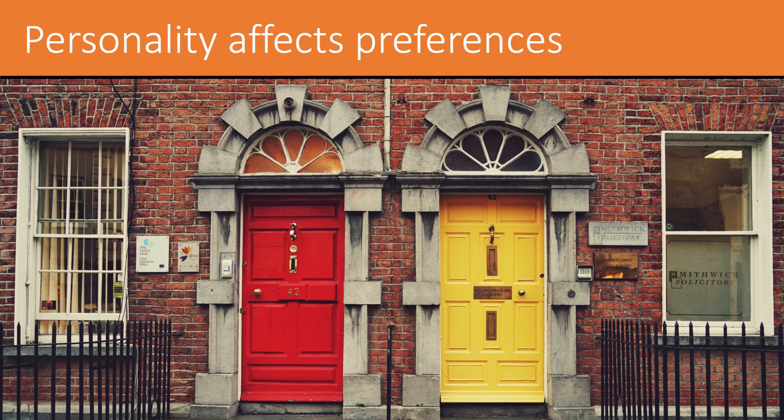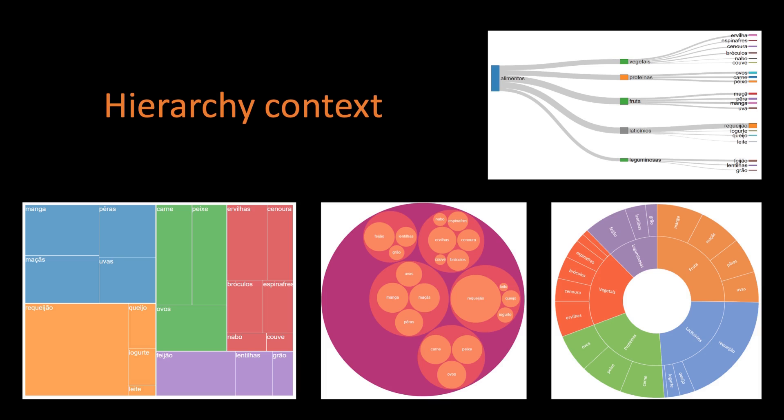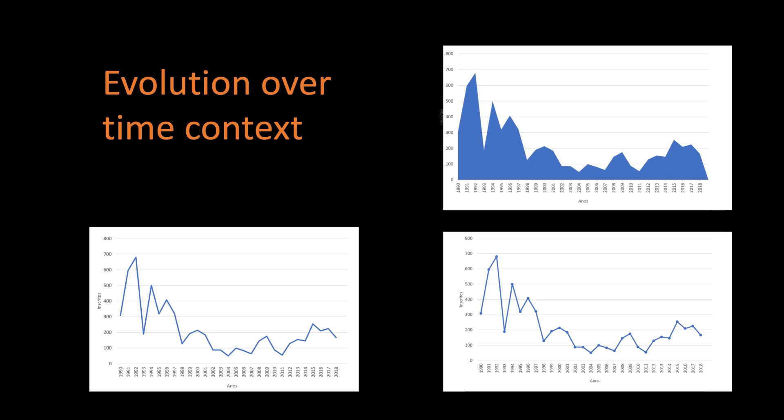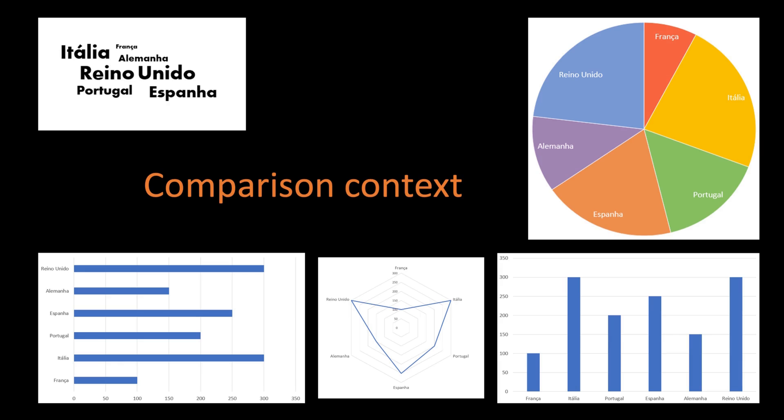Nowadays, technology is developed for a single audience, assuming that one size fits all. Nevertheless, we all have individual differences, such as personality. Taking into account how personality affects preferences, we study whether it has an effect on hierarchy, evolution over time, and comparison contexts, regarding information visualization.